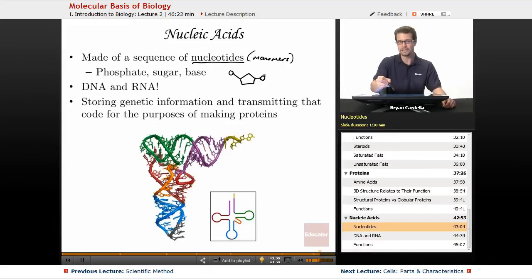The different bases, nitrogenous bases, whether they're A's, G's, C's, or T's - you may have heard about those before. These make up the genetic code in terms of the sequence of them in the polymer of DNA or RNA.